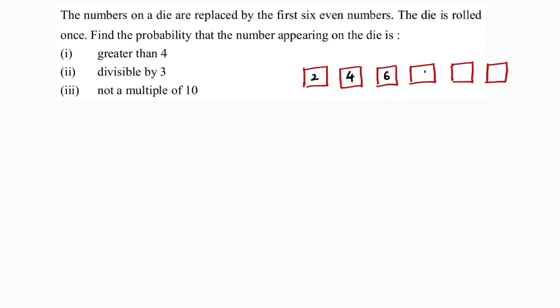The six even numbers are two, four, six, eight, ten, twelve. These are our sample space — the total outcomes. The probability formula is: number of favorable outcomes divided by total number of outcomes.